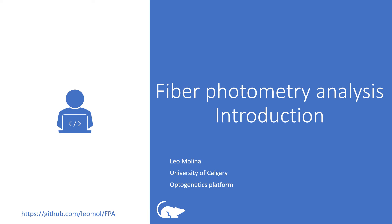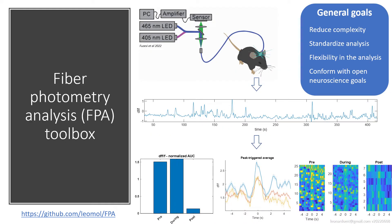Fiberphotometry is a method for recording in vivo neuronal activity in freely behaving animals, and the FPA toolbox provides means to pre-process and analyze your recorded data. You can download it using the link shown on the screen. The FPA toolbox was created to facilitate and standardize the analysis of fiberphotometry data, so that you can go from recording data to producing plots with little effort. Besides reducing the complexity of the processing steps to just a few lines of code, this library provides flexibility in the parameters so that the analysis can be molded into any of the many methods described in published research.